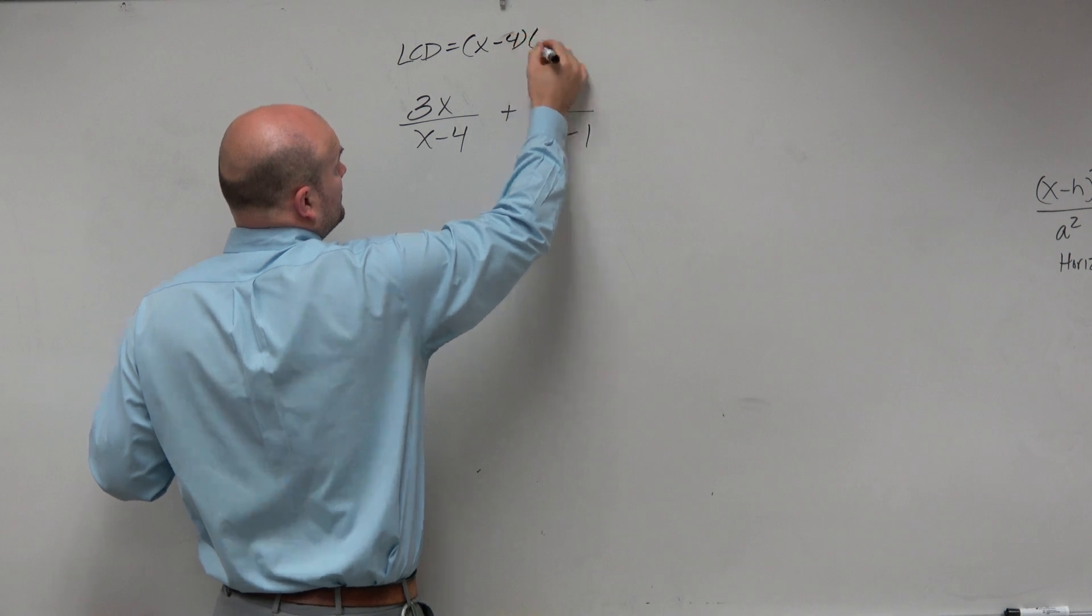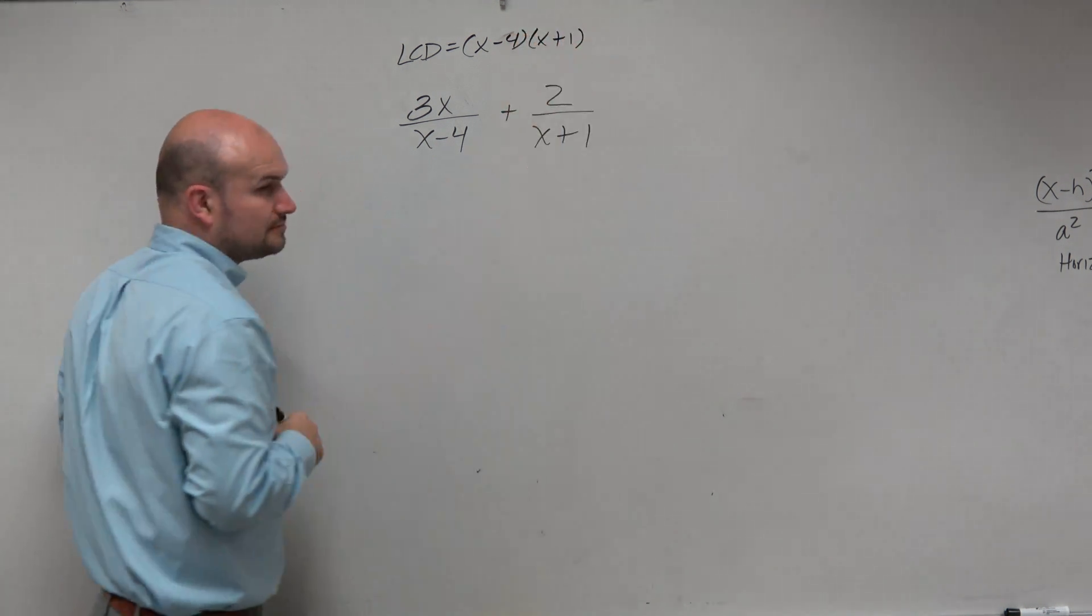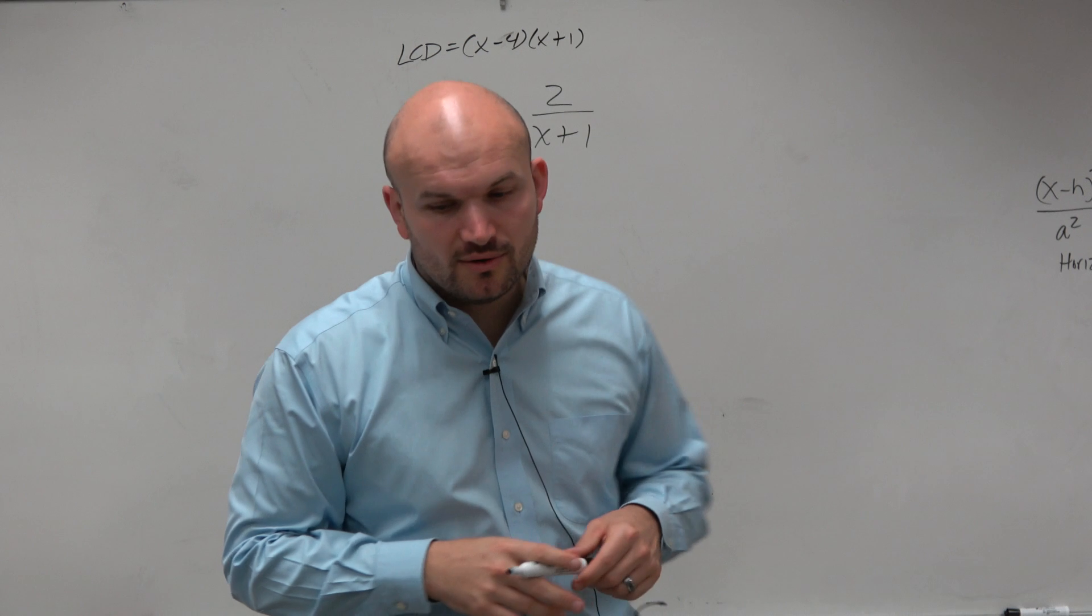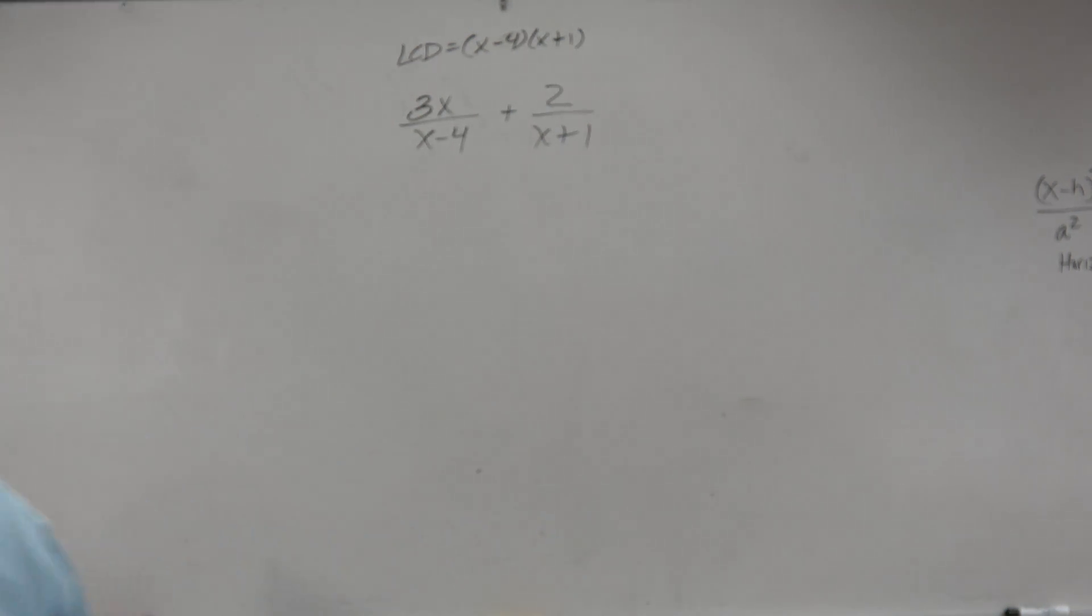So in this case, now all we simply need to do is multiply to get our common denominators. So to get x minus 4, x plus 1, we can just multiply by x plus 1 on the top and the bottom.